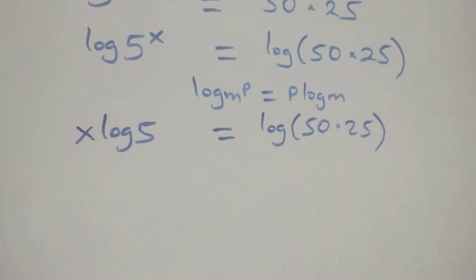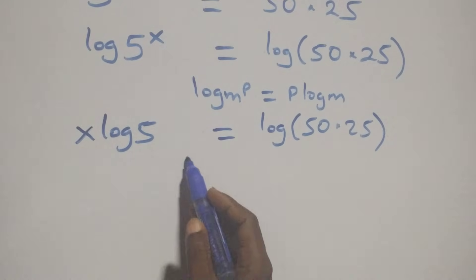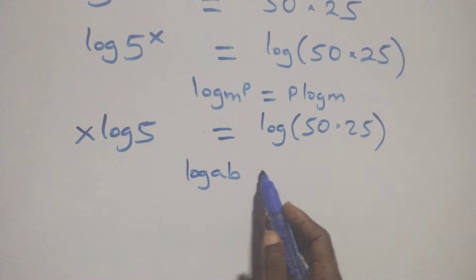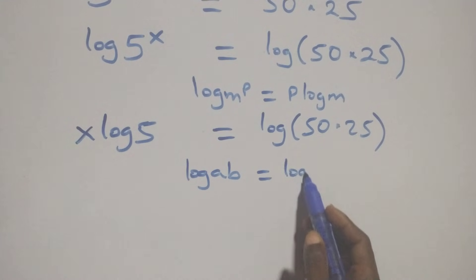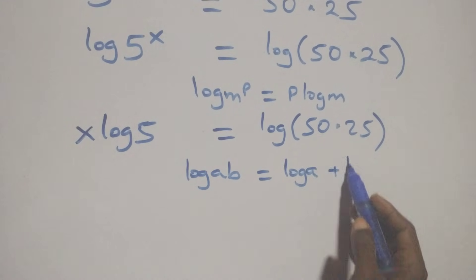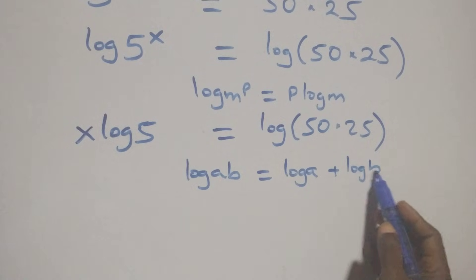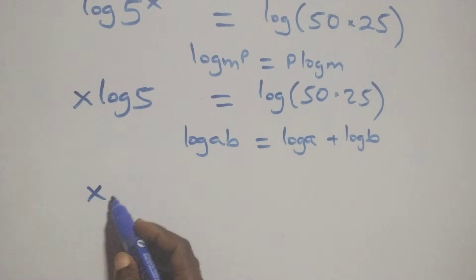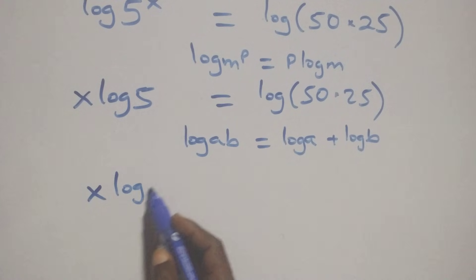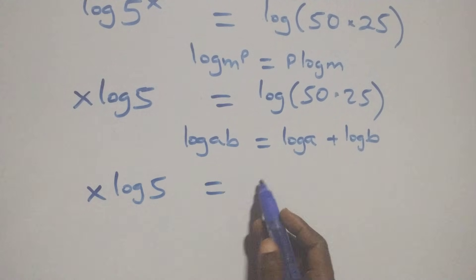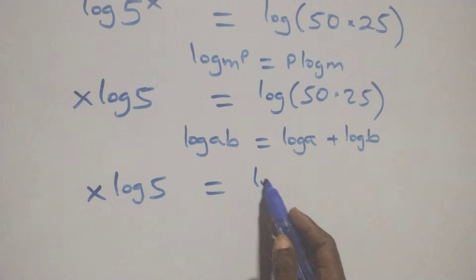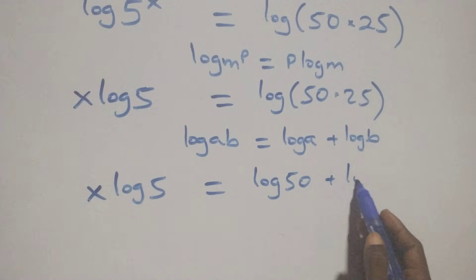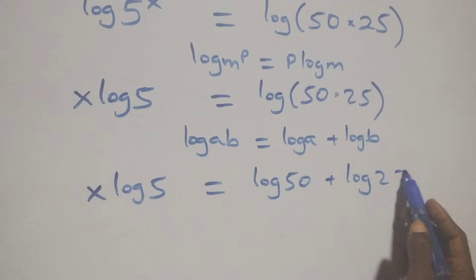This also follows the log product rule: log of a times b is the same as log a plus log b. So we have x log 5 equals log 50 plus log 25.